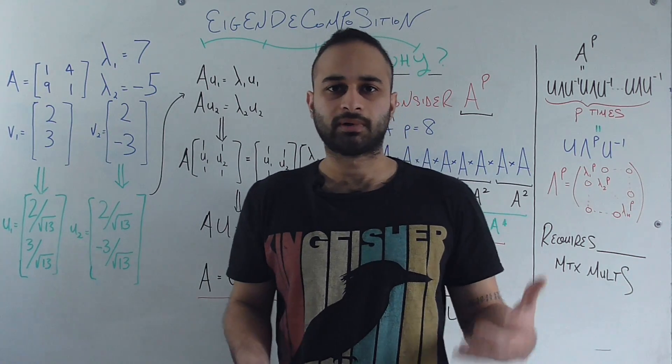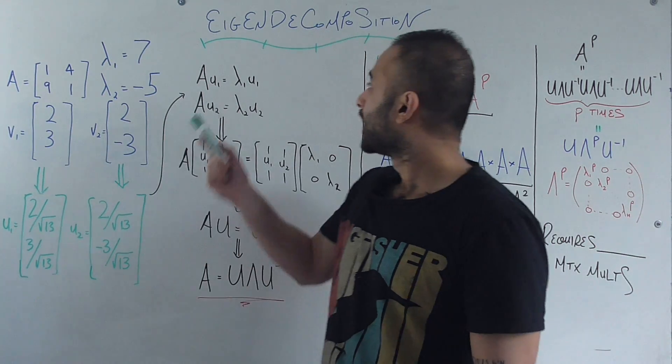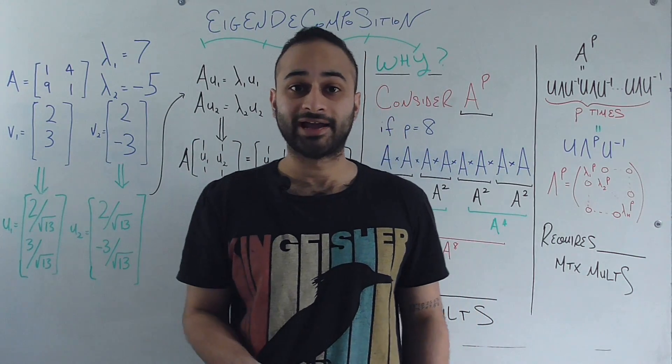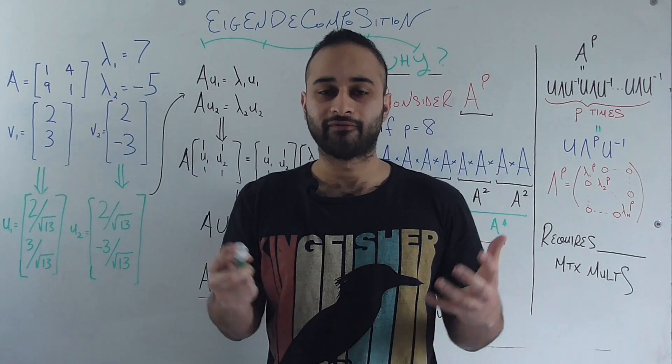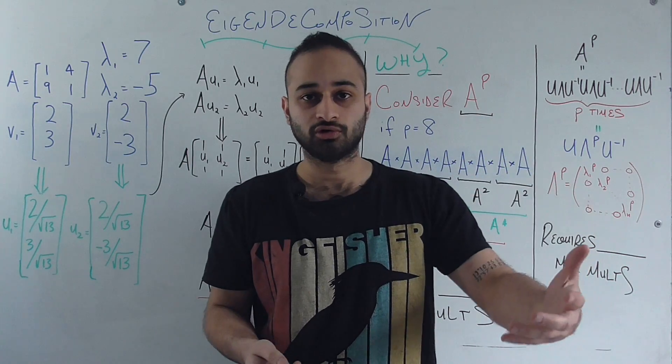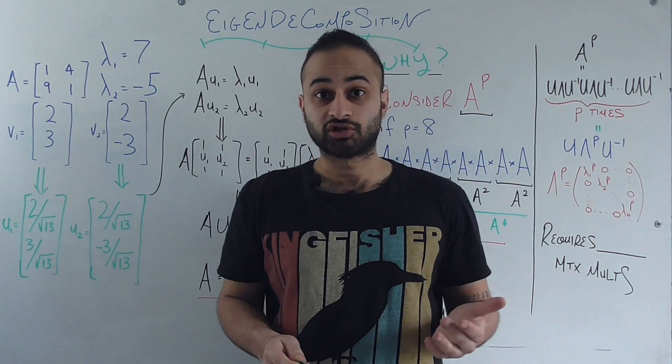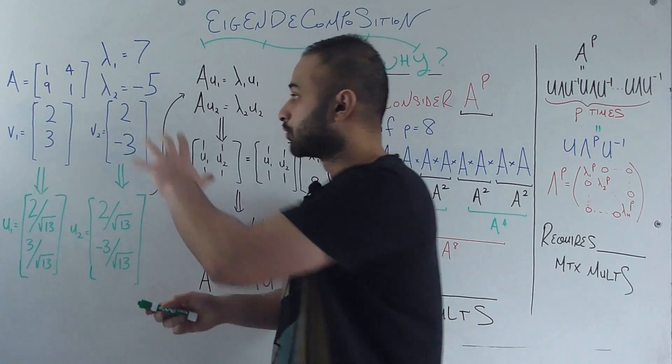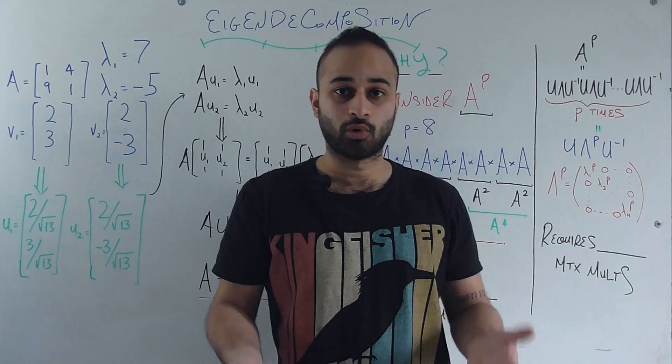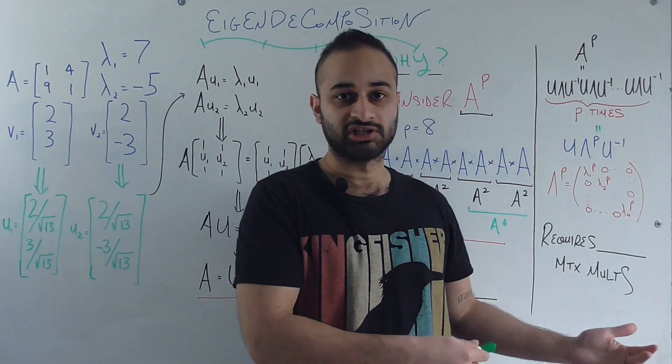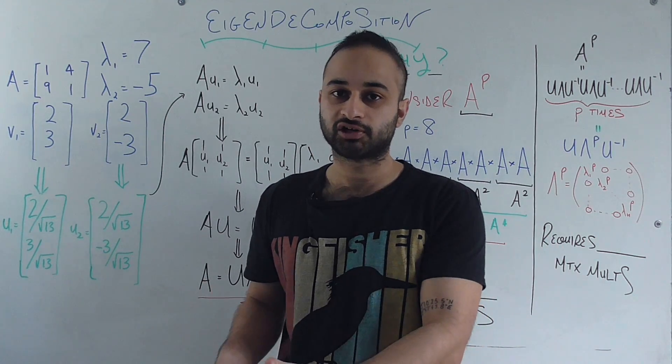So first let's go ahead and talk about what it is. You probably noticed the word eigen in the eigendecomposition and that's going to be at the heart of how we actually derive it. This has a lot to do with the eigenvalues and eigenvectors of a matrix, which implies that the matrix we're working with has to be square because only square matrices have eigenvalues and eigenvectors.